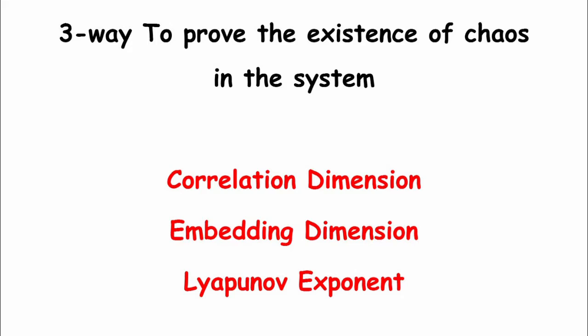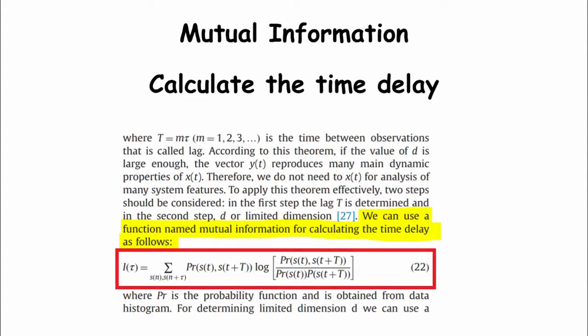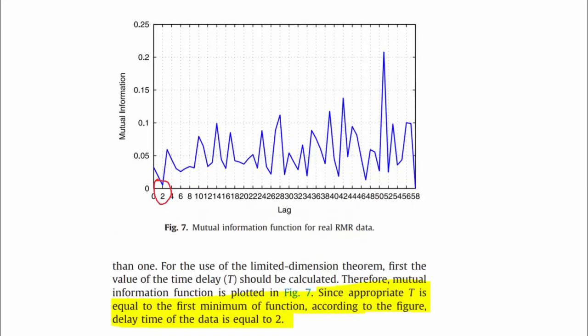Let me talk about the case theory procedure. Firstly, the chaotic condition of a dynamical complex non-linear system is assessed using the Case-ANFIS model with three parameters: correlation dimension, embedding dimension, and Lyapunov exponent. To apply this theorem effectively, two steps should be considered. In the first step, the lag is determined. In the second step, the embedding dimension is determined. We can use a function named mutual information for calculating the time delay. In this figure, t is equal to the first minimum of the function; according to this figure, two is the lag of mutual information.